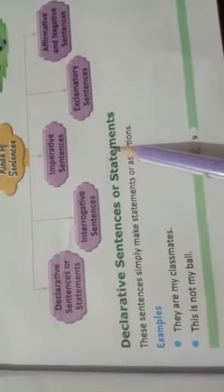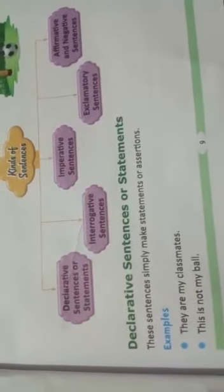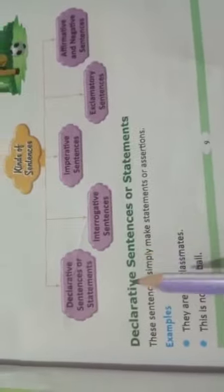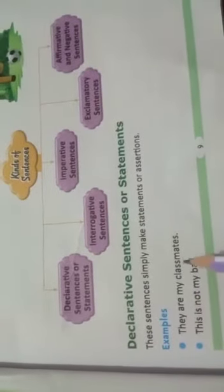First are declarative sentences, also called statements. A declarative sentence simply makes a statement — it conveys something in a simple, straightforward way.